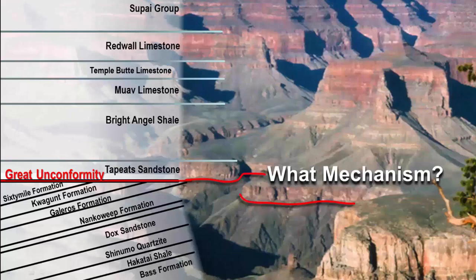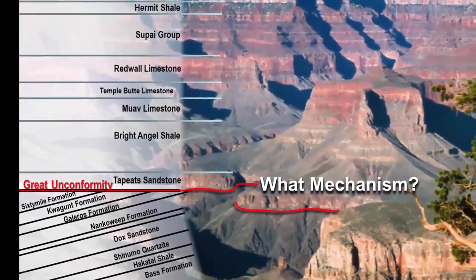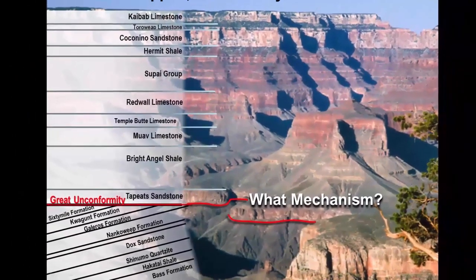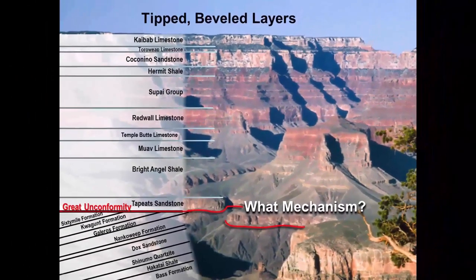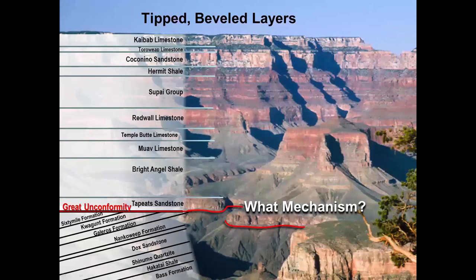Whether the great unconformity represents one-half billion years or not, no mechanism is provided that explains this horizontal beveling of tipped layers. Vague reference to erosion over time does not suffice — erosion over such a long time should have left a substantial pattern of deep erosion, not a beveled, nearly horizontal plane. What mechanism could produce this beveled feature? What tipped the layers under the unconformity in the first place? Beveling tipped layers horizontally requires relative motion against something from above. Tipping layers requires force on a massive scale such that continental rock below them is compressed, buckles up, and tips the layers.